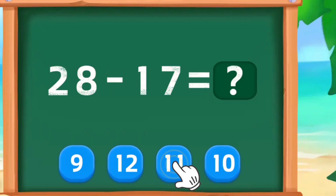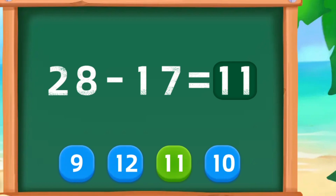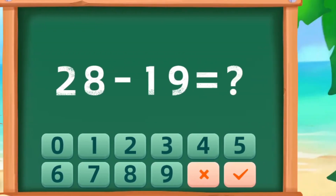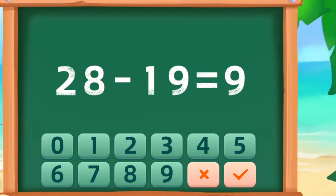Select the correct number. 25 minus 19 is 11. Enter the correct number. Good work.